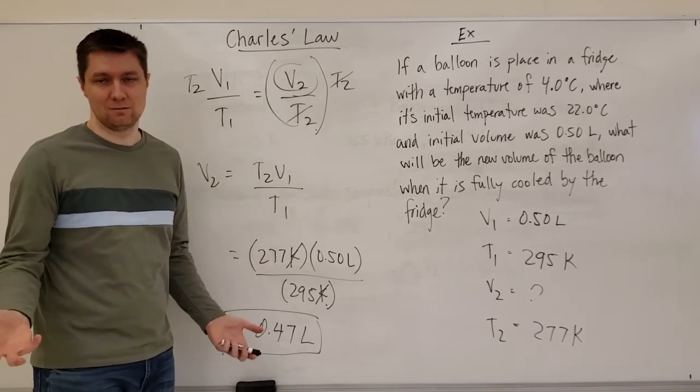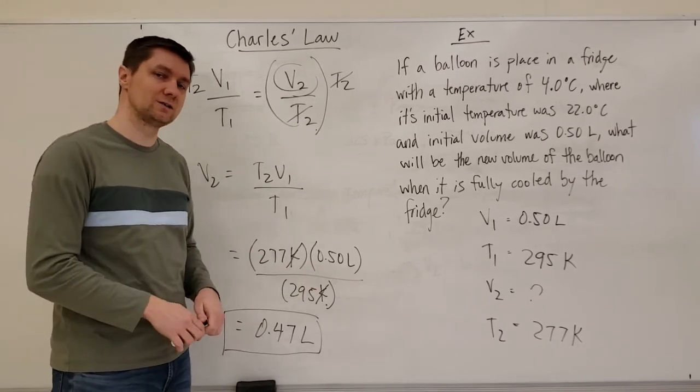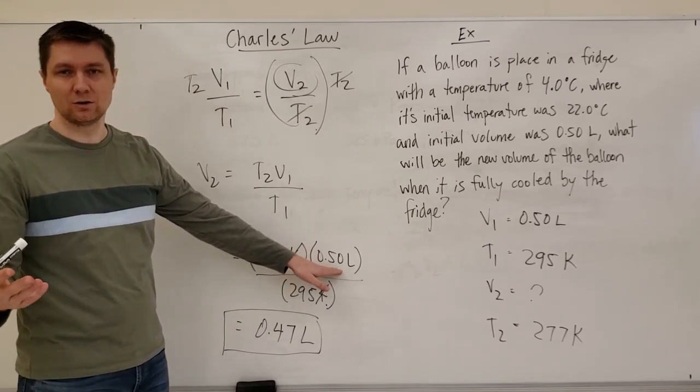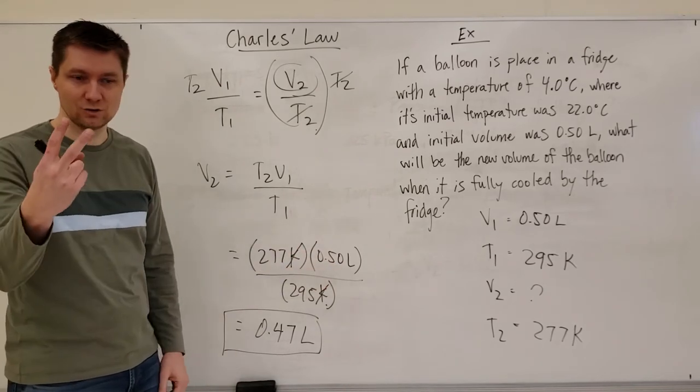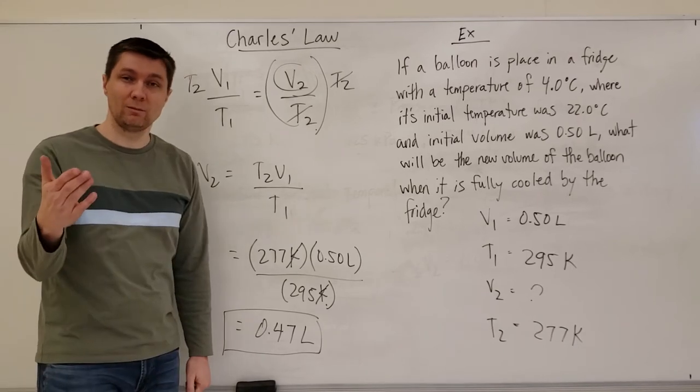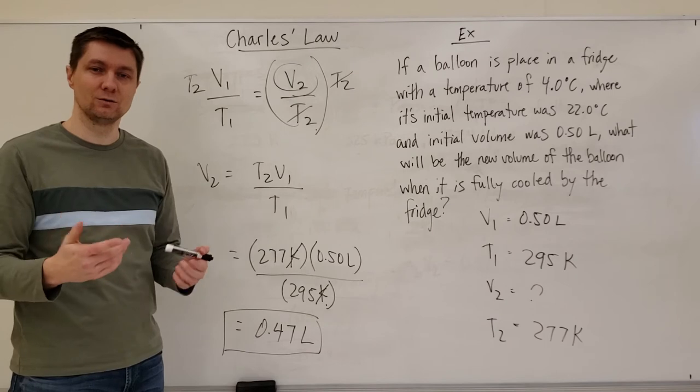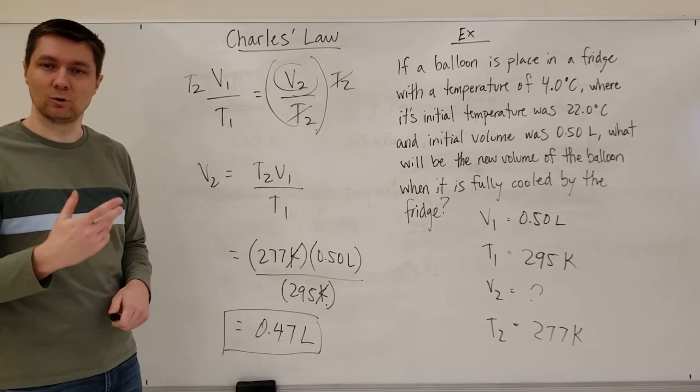In this case it didn't matter for this question but in other cases it might. So just ignore sig digs for temperature numbers. This is the only number I would use to determine how many sig digs I should be writing my answer to. 0.50 has got two sig digs so my answer is going to have two significant digits. I'm going to do one more problem to show one more thing that I often see kids do.